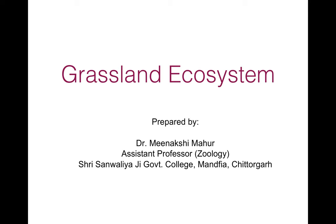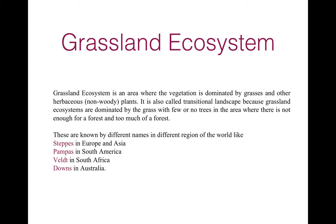Today my topic is Grassland Ecosystem. A grassland ecosystem is an area where the vegetation is mainly dominated by grasses and other non-woody herbaceous plants. It is also called a transitional landscape because it is dominated by grass with few or no trees, where there is not enough rainfall for a forest.